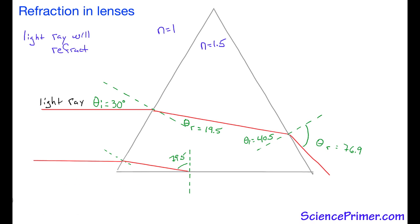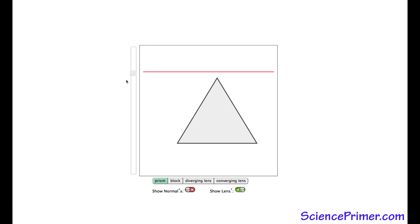The law of reflection states that the angle of reflection equals the angle of incidence, allowing us to calculate the path of the ray as it reflects and moves back into the prism, where it will eventually hit the far side. The process of calculating angles of incidence, angles of refraction, and whether or not a ray of light will undergo total internal reflection, can be used to describe the path of any ray of light.